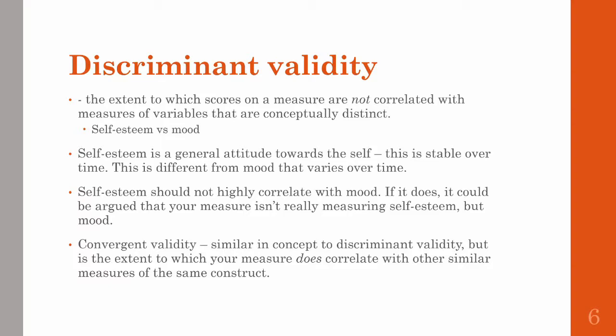Similar to discriminant validity is convergent validity, but it's kind of the opposite — it's the extent to which your measure does correlate with other similar measures of the same construct. For a given construct, there's not going to be just one measure; multiple researchers will probably have different variations or measures that they have developed. If they're all measuring the same thing, they should all correlate well together.